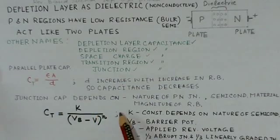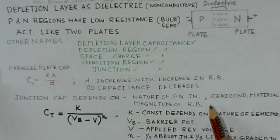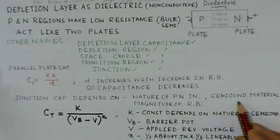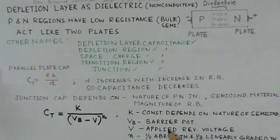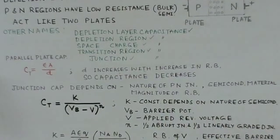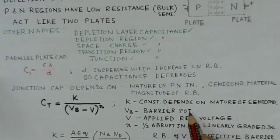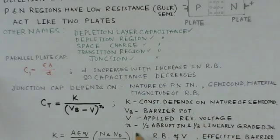Now the junction capacitance also depends on the nature of the PN junction, the type of semiconductor material, and the magnitude of the reverse bias. This is another relation relating these constants here. Here K is a constant which depends on the nature of the semiconductor. VB is the barrier potential, that is about 0.7 volts for silicon, 0.3 for germanium.